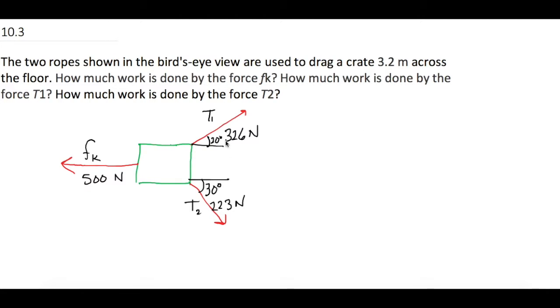T1 and T2 are the ropes, and the distance that it goes is 3.2 meters. The direction is that the ropes are pulling it this way, and friction is fighting against it back that way.